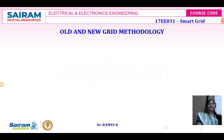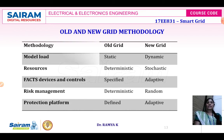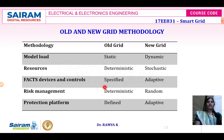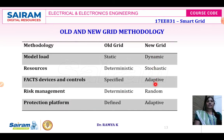We have the old and new grid methodology. With respect to certain characteristics we are going to describe: with respect to the load, whether it is going to be a static load or dynamic load, and with respect to the resources, whether it is going to be deterministic resources or statistic resources. Then what are the different types of FACTS devices and controls we are using, whether the defined FACTS devices used in the system are specified or adaptive. In case of old grid, we are going to use all these factors. Whereas in case of new grid, we are going to use dynamic, statistic, adaptive, random and adaptive with respect to model, resources, FACTS devices and control, risk management and protection platform.